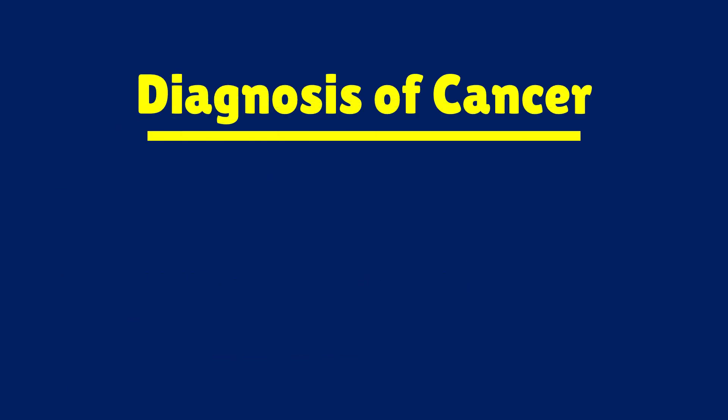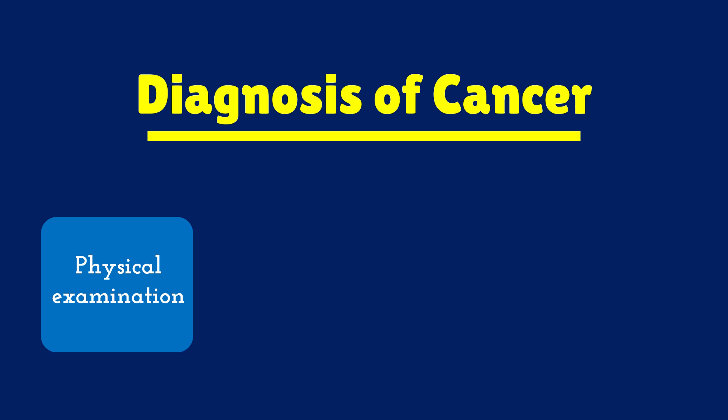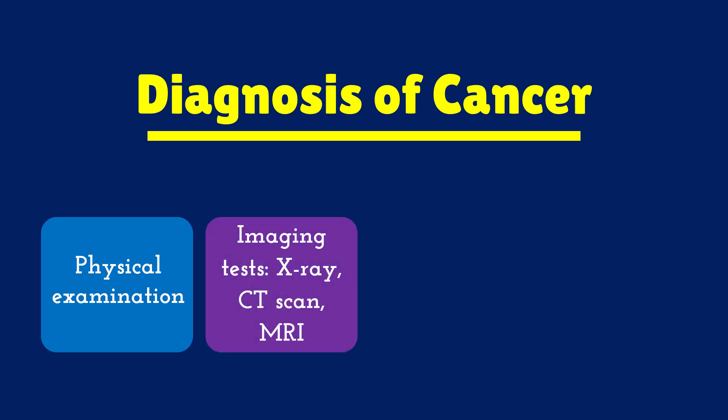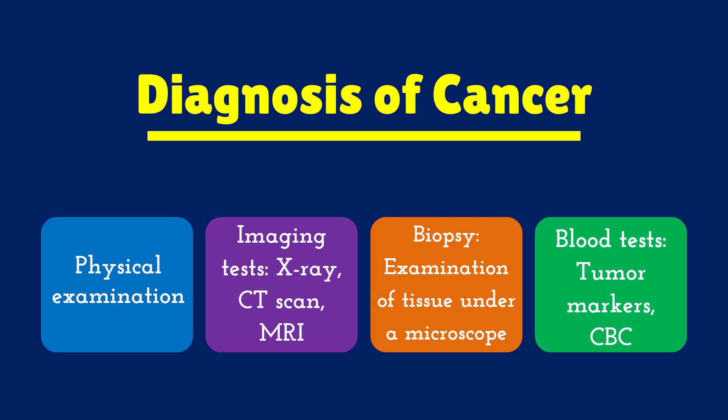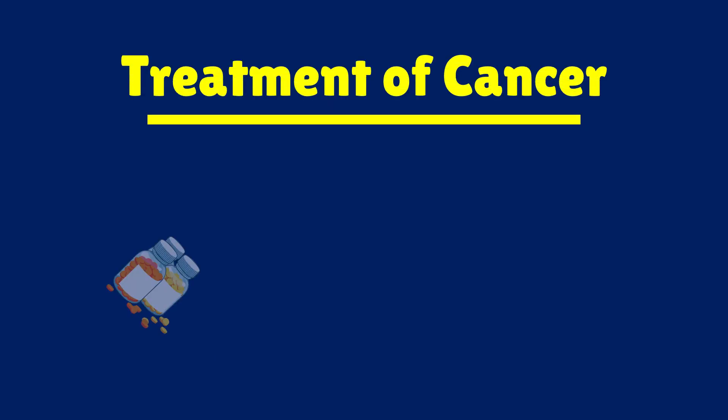Diagnosis of cancer involves certain examinations. First, physical examination — by physically examining the patient, certain signs of cancer can be observed. Then imaging techniques like X-ray, CT scan, and MRI can be used for detection. Biopsy involves taking a tissue sample and studying it under a microscope to see whether it is cancerous. Blood tests can also be done to observe certain markers called tumor markers — if these markers are present, the patient may be diagnosed with cancer.